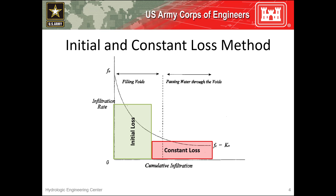When using the initial and constant loss method, you only have an initial loss volume — which is the green rectangle on this image — and a constant rate — which is the top of the rectangle on this image — to recreate this exponential curve. As such, you'll typically overestimate infiltration rates at some times and underestimate infiltration rates at other times in order to provide a good fit throughout the entire simulation time window.